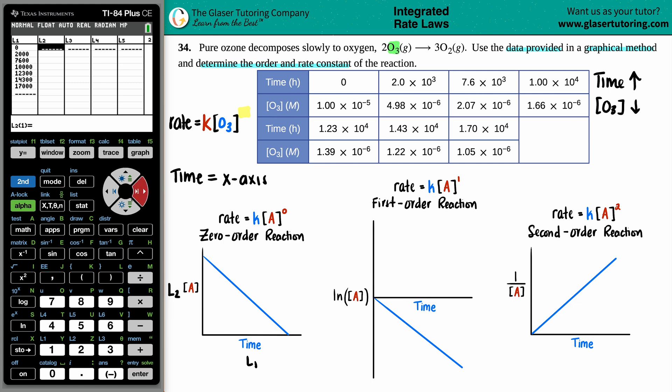Then the next time was 2.0 times 10 to the 3rd. The next point was 7.6 times 10 to the 3rd. 1.00 times 10 to the 4th. 1.23 times 10 to the 4th. 1.43. Don't be worried that it's changing out of scientific notation. It just does that. And then 1.70 times 10 to the 4th. So all my time values are in. And now I just have to plug in the appropriate concentrations. So I go with the same idea. So 1.00 times 10 to the negative 5th. 4.98 times 10 to the negative 6th. Don't worry that it changed the value. The number is still in here. It just has to round because there's just a tight space up there.